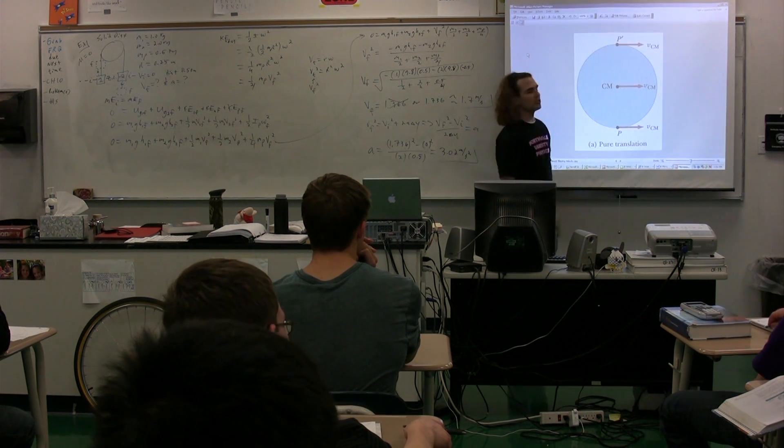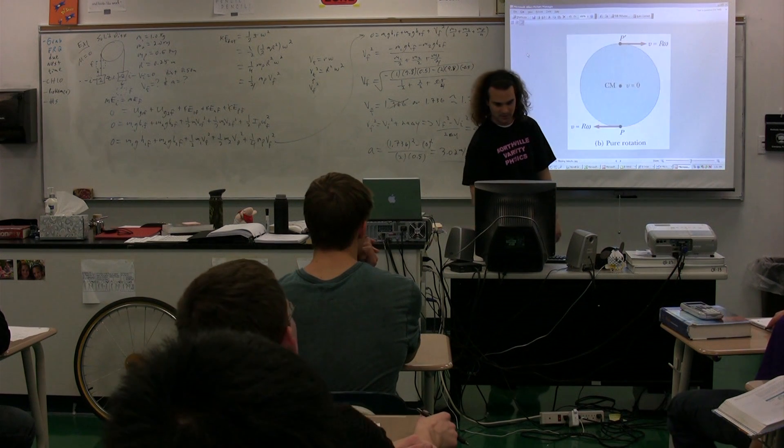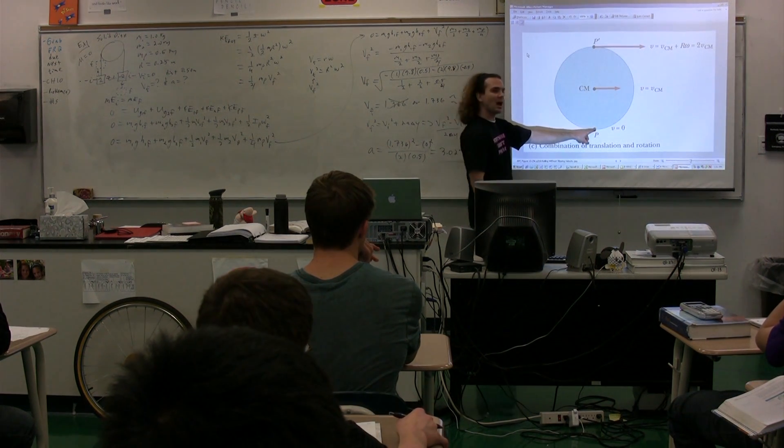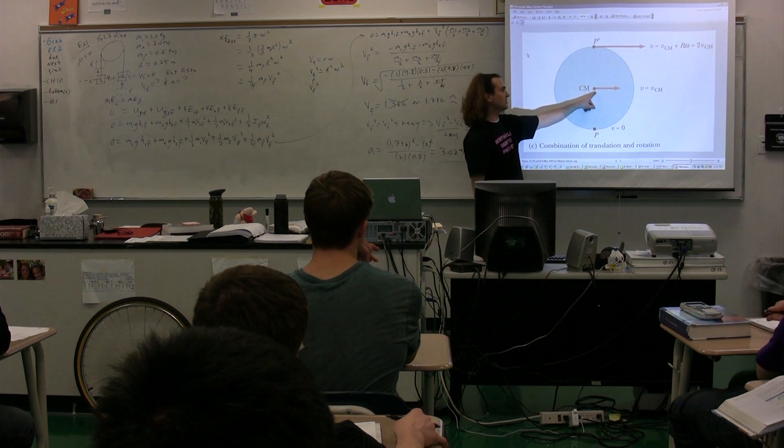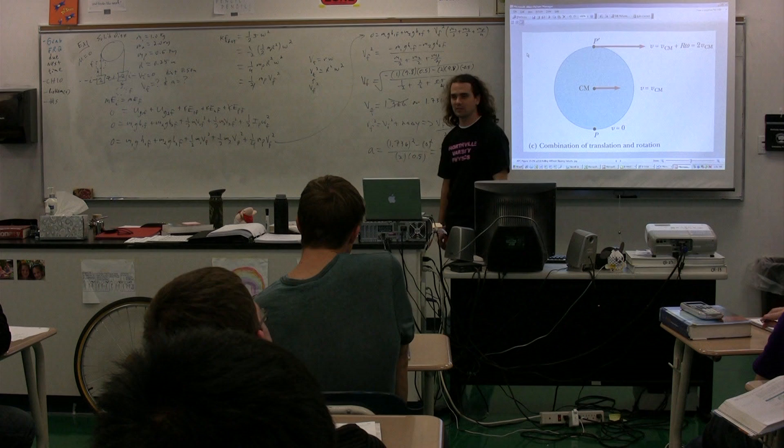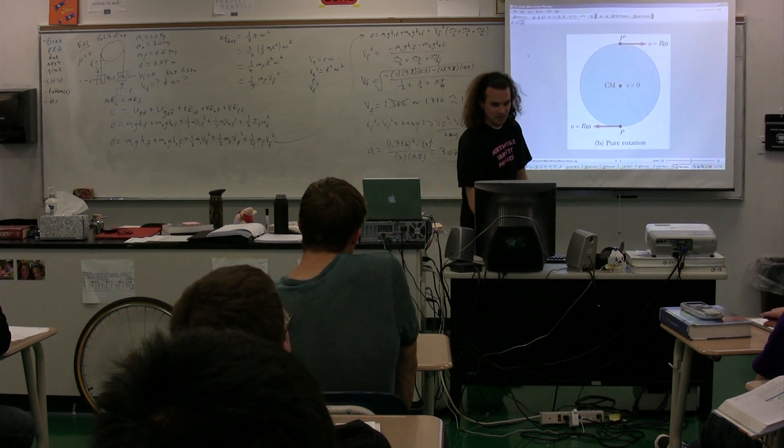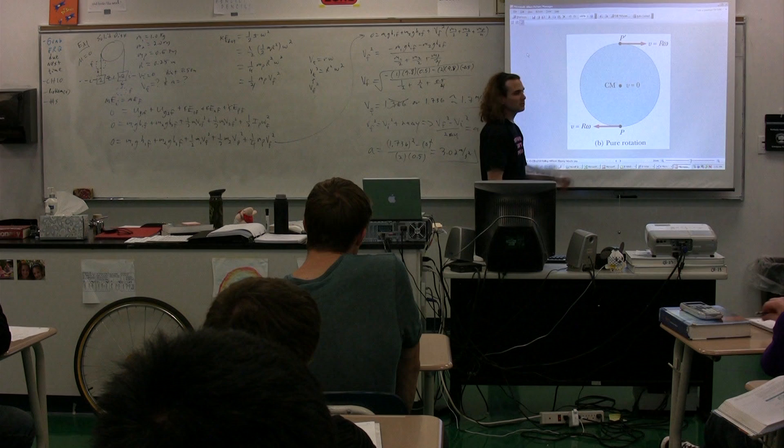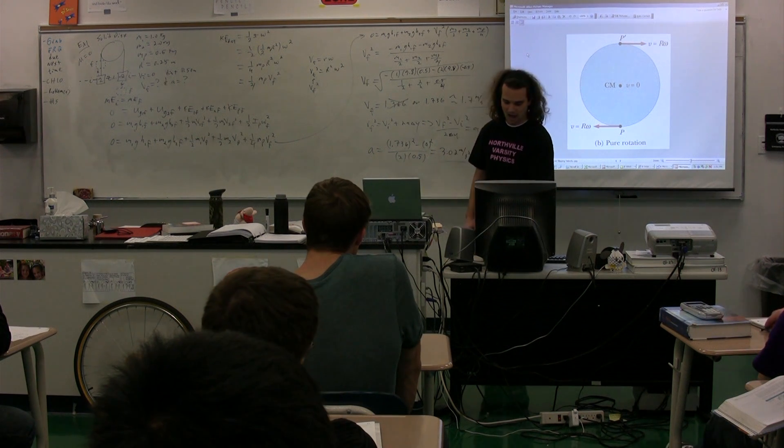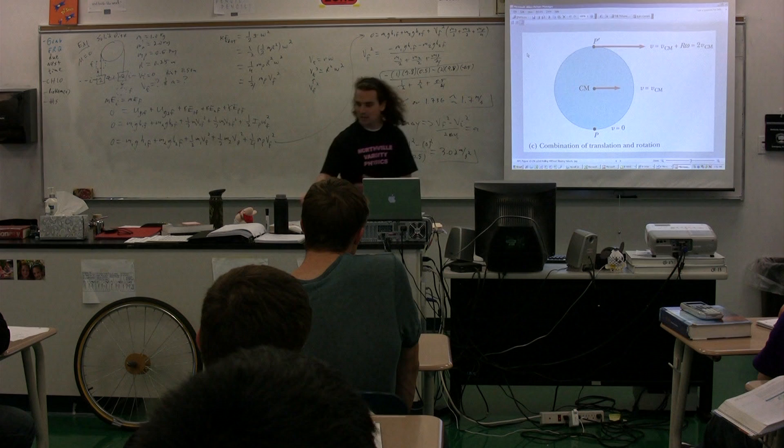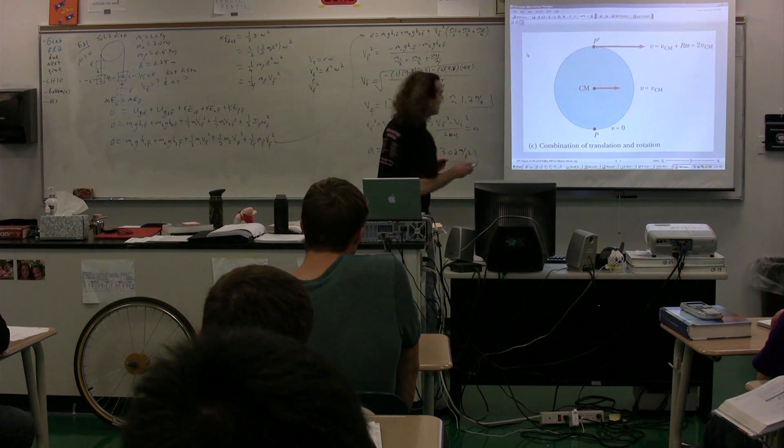And if we add the ones in the middle, we just end up with the velocity of the center of mass. So if you look, the velocity at the contact point is zero, the velocity of the center of mass is v_cm, and the velocity at the very top is two times v_cm. But it turns out that the velocity of the center of mass ends up being equal to r times omega. So v_cm = rω.